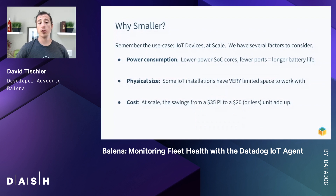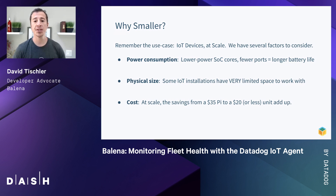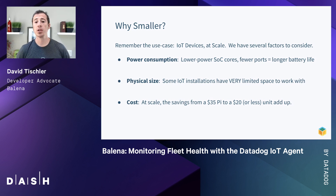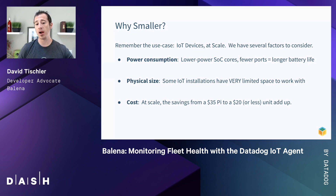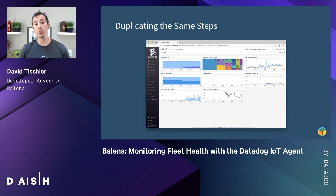Now let's go smaller. We're talking about IoT devices here, and you have to remember the use case: IoT devices at scale. There are several important factors to consider. The first is power consumption — we want a lower-power SOC, fewer ports, and as minimal a hardware footprint as possible, because that equals longer battery life. My device is out in the desert, but a lot of IoT projects are constrained. Physical size is also important — some installations have very limited space. And finally, cost: at scale, the savings from transitioning from a $35 Pi to a $20 or even less unit add up. So let's duplicate the exact same steps on something smaller.